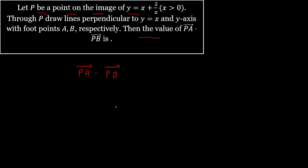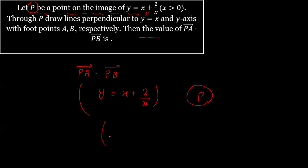The point P lies on the curve y = x + 2/x — meaning P satisfies this equation. We can take a general coordinate: P = (x₀, x₀ + 2/x₀). Then we draw a line perpendicular to y = x.